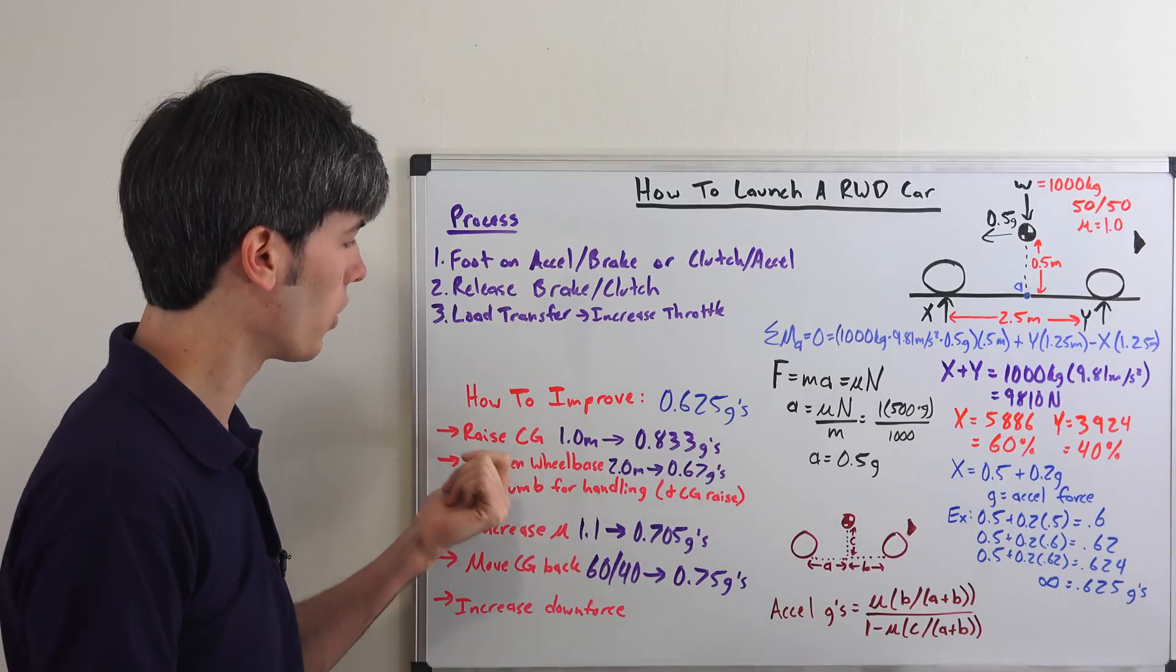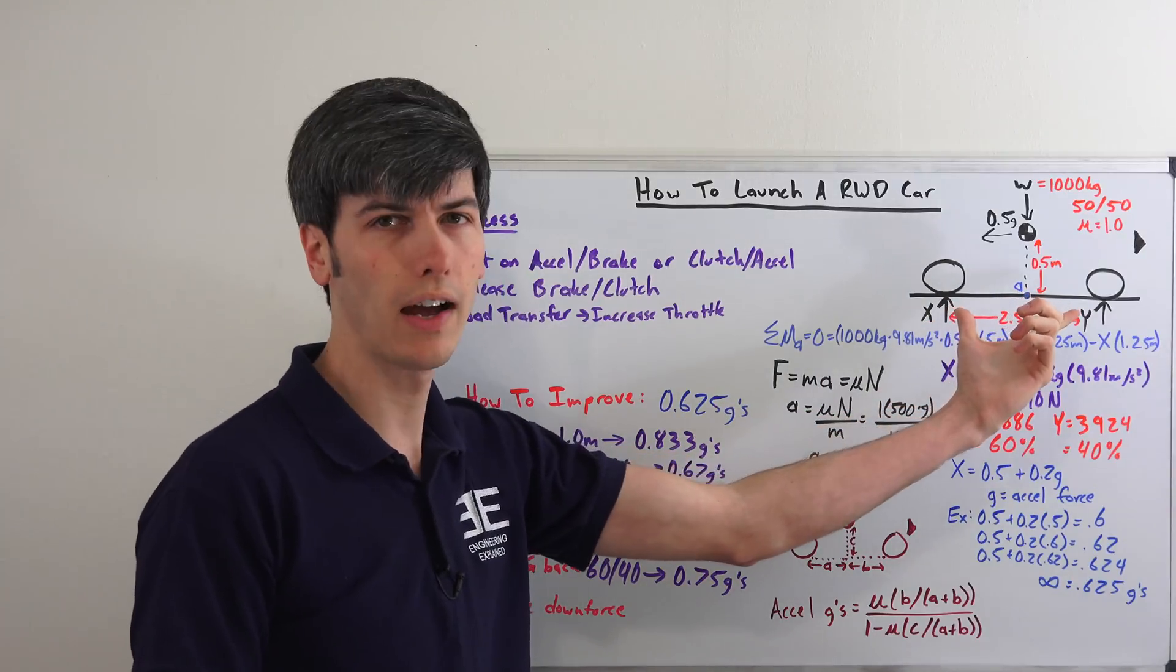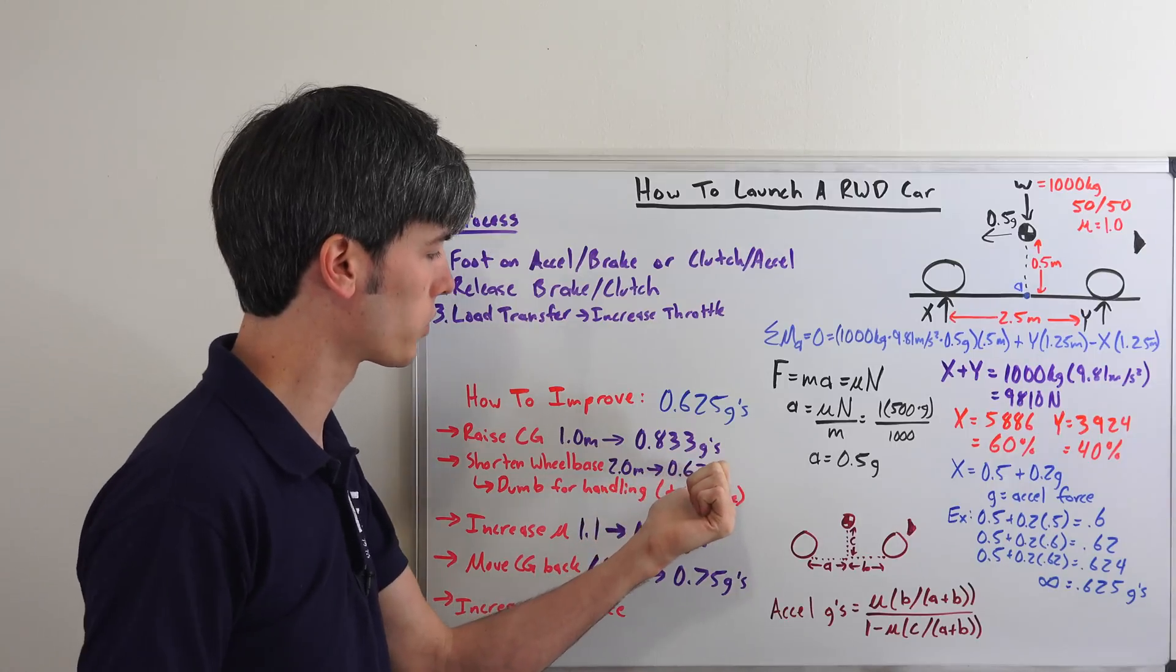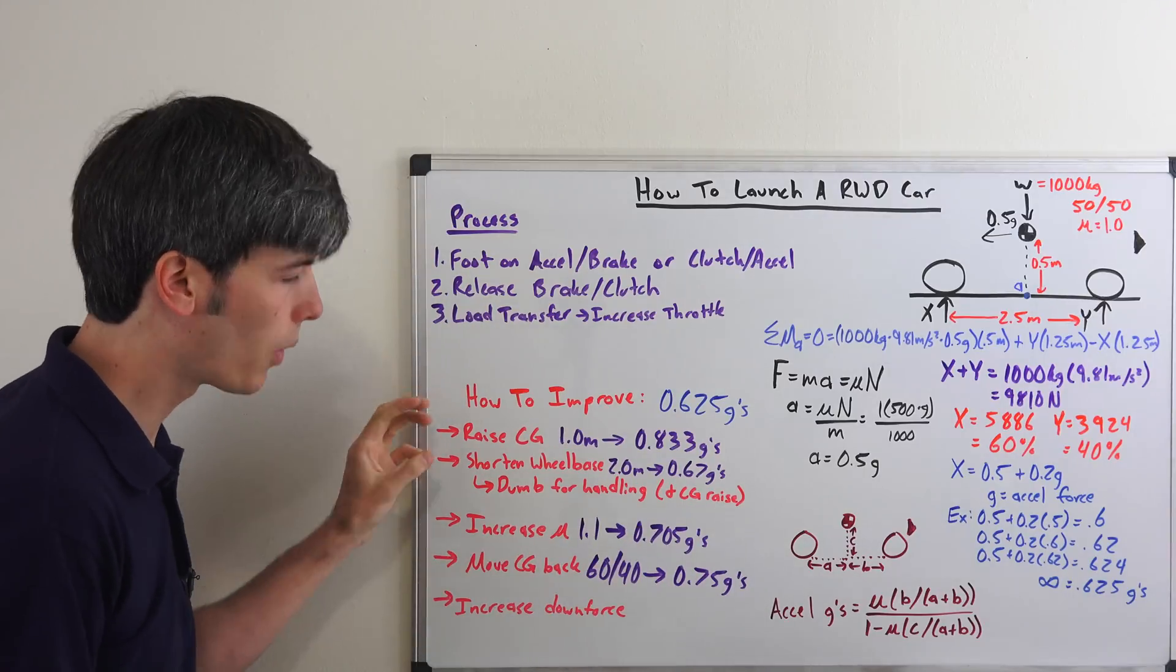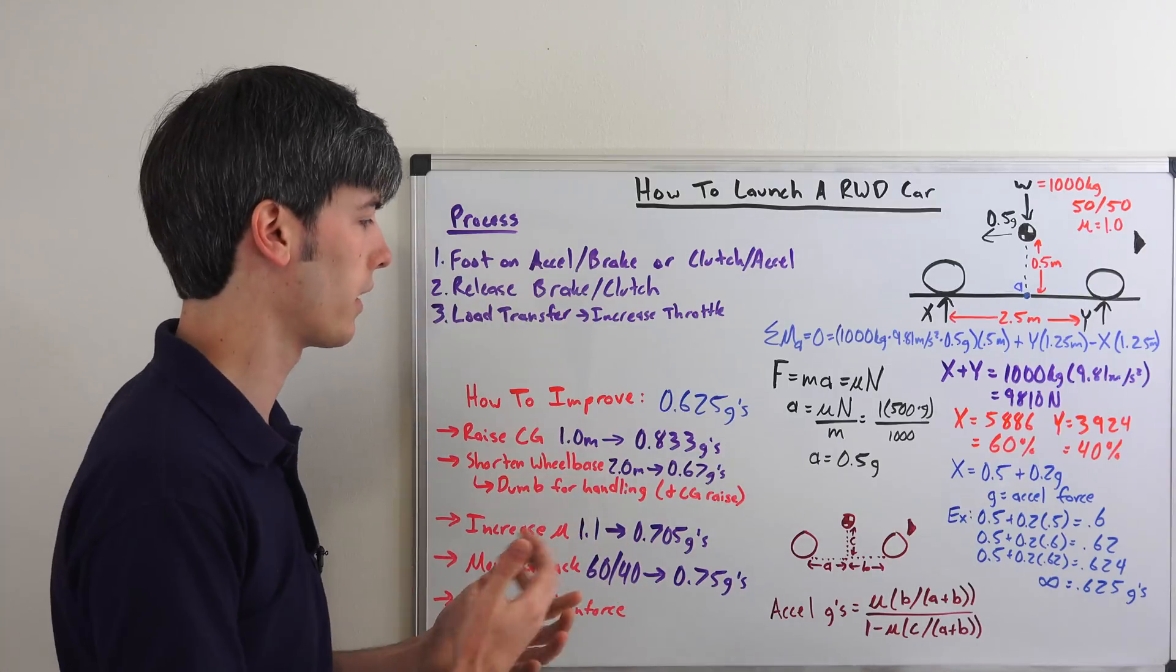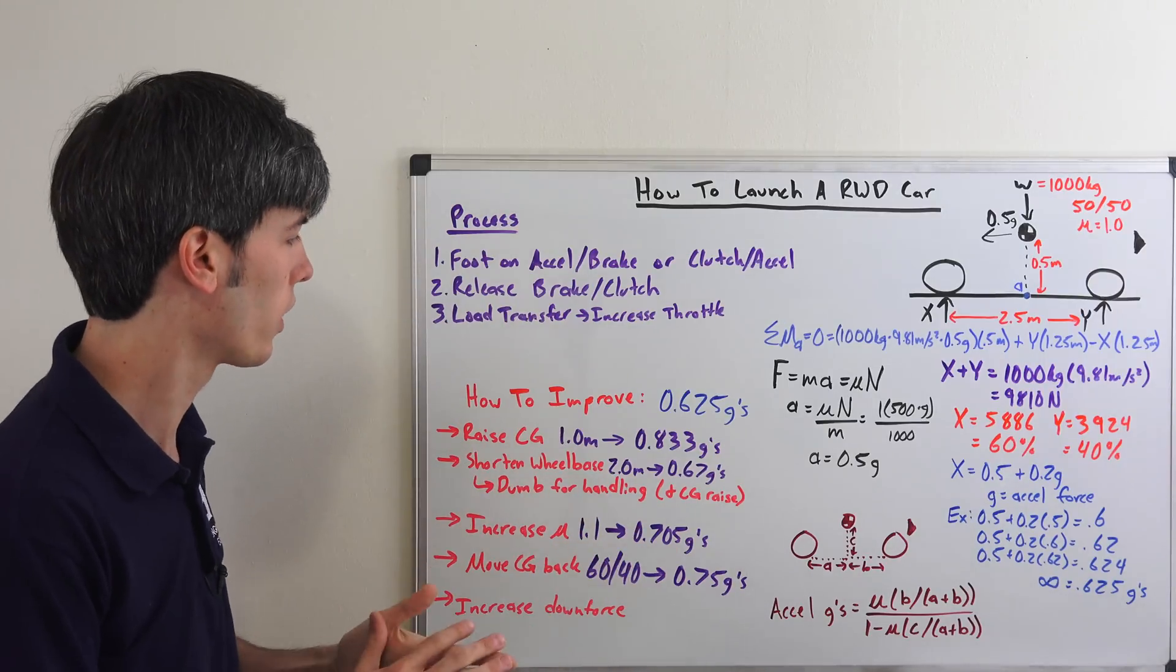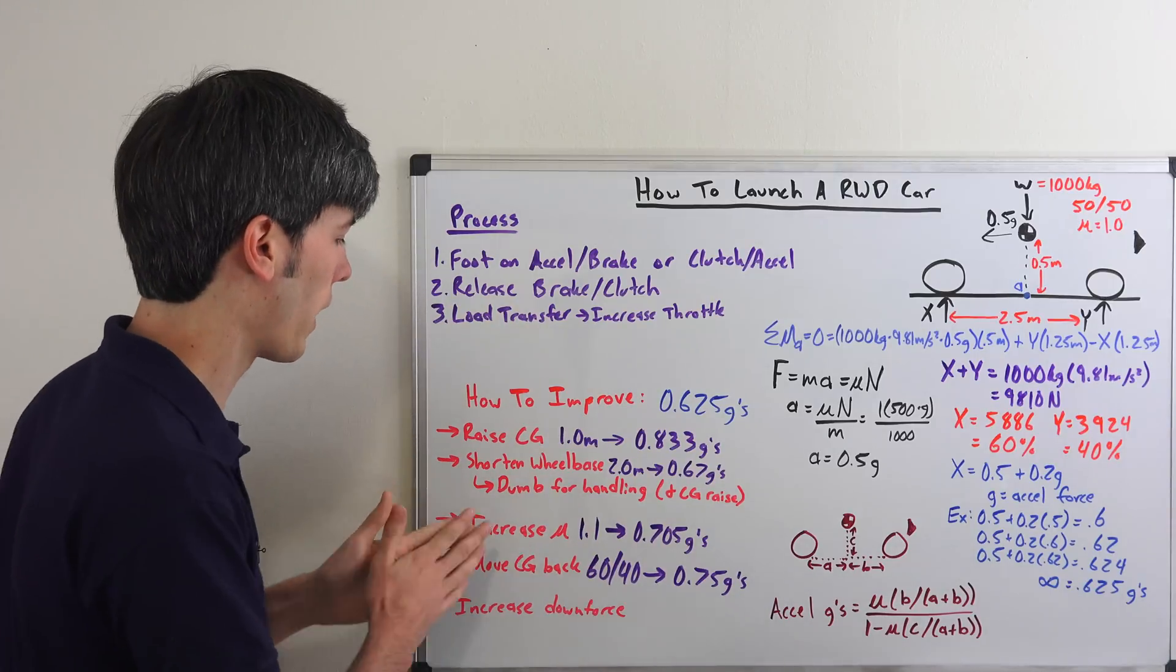Now, you can also do this by shortening the wheelbase. So if we shorten our wheelbase from 2.5 meters down to 2 meters, well that's going to improve our acceleration for a rear wheel drive vehicle to 0.67 g's, assuming we have the power. Now, both of these are kind of dumb to do. You don't really want to raise the CG or shorten the wheelbase of your vehicle because it's going to be less stable. Now, if it's just a drag vehicle, fine. It may be fine to do this, but there's better ways of doing it that don't sacrifice handling. And so that's what we have here.